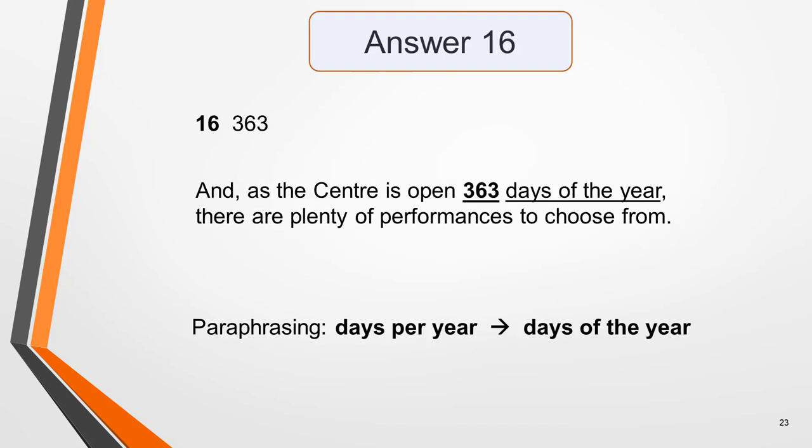Answer 16 is 363. Here's the sentence: 'And as the centre is open 363 days of the year, there are plenty of performances to choose from.' This answer is paraphrased but close enough — the speaker says 'days of the year' while in the notes 'days per year' is used. If you got any of the answers wrong, listen to the recording again and see if you can pick them out now that you're more familiar with the text.